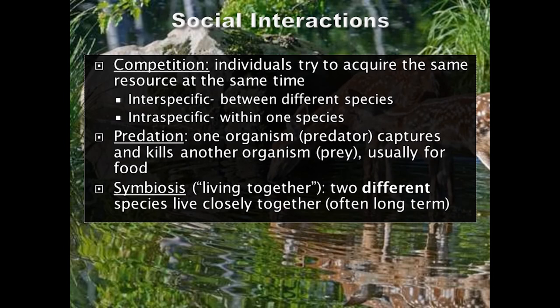There are several different ways that living things interact in their environment. Competition is when two individuals try to gain access to the same resource at the exact same time — that resource could include food, water, shelter, or access to a mate. If competition is between organisms of different species, it is interspecific competition. If competition occurs between organisms of the same species, it is intraspecific competition. Predation occurs when one organism kills another as a food source — the organism that does the killing is the predator, whereas the individual killed is the prey. Symbiosis refers to a close, long-term living relationship among organisms of different species.